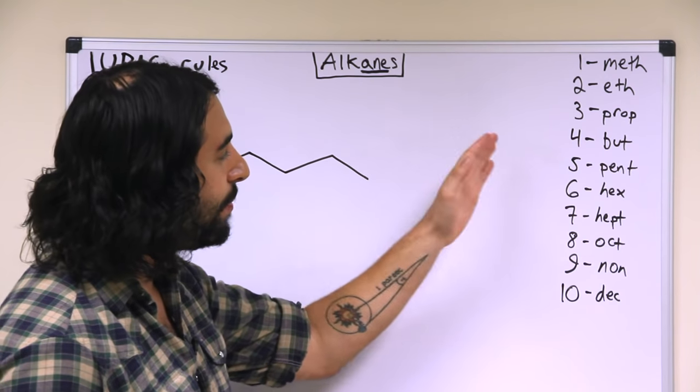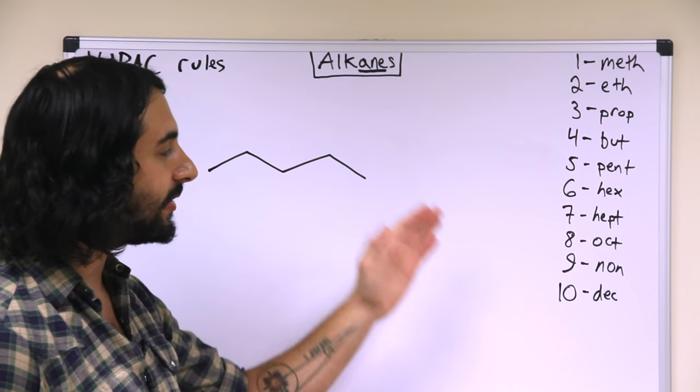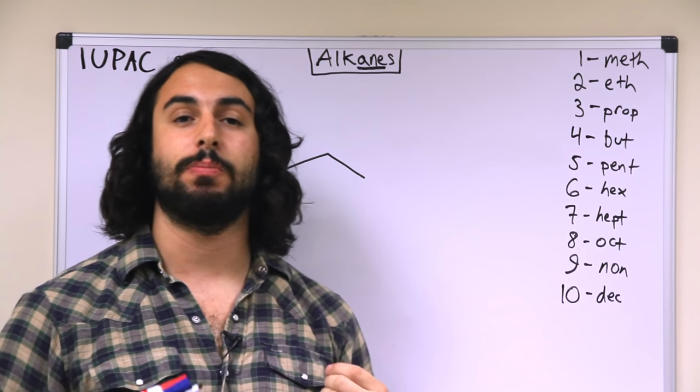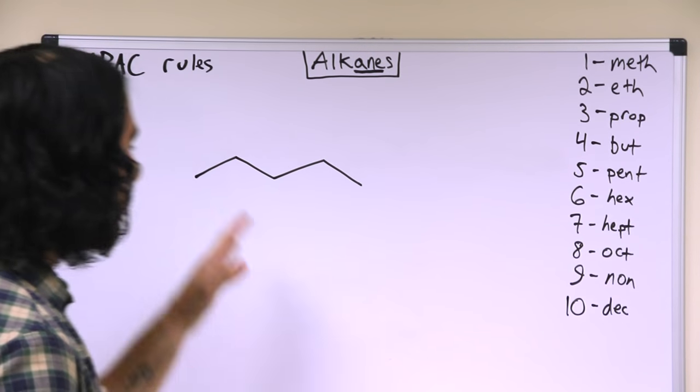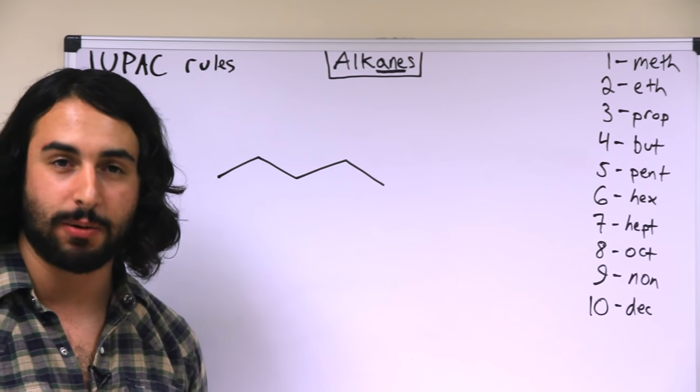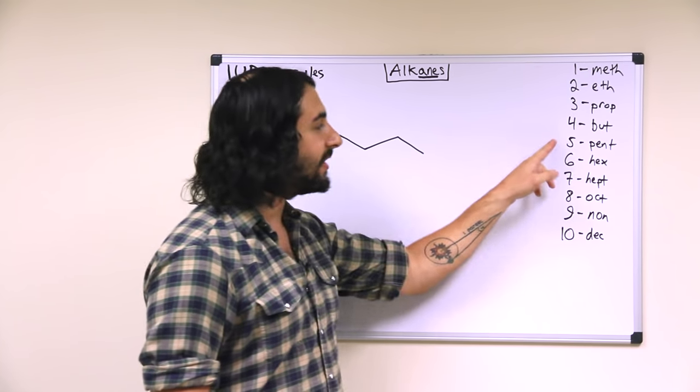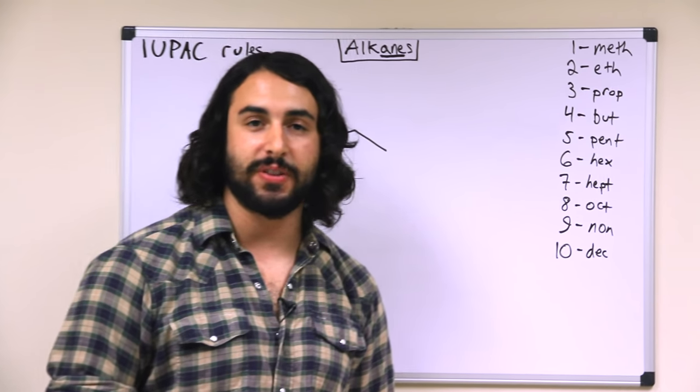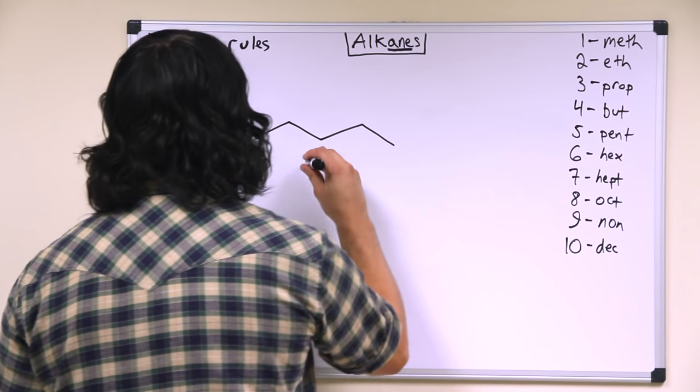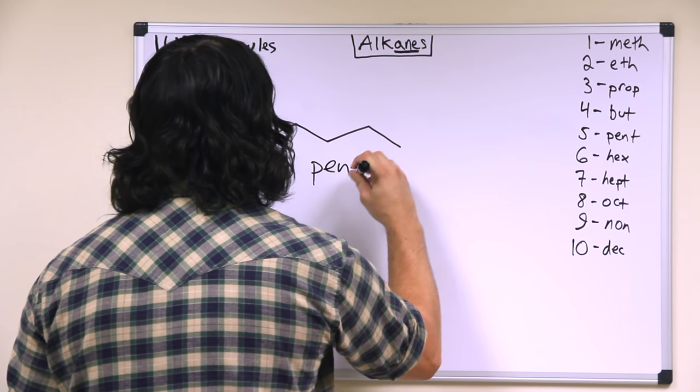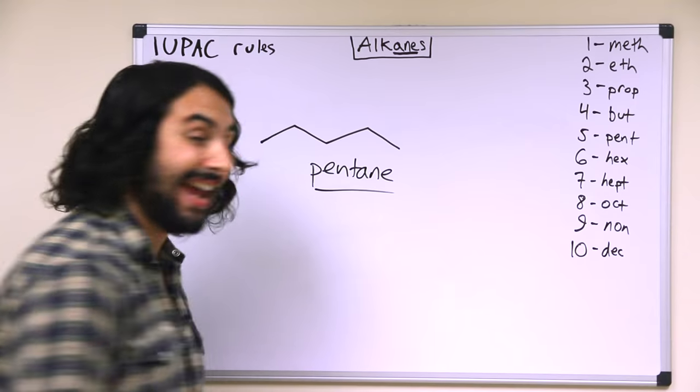So meth, eth, prop, but, pent, hex, hept, oct, non, dec. These would be the prefixes of a given molecule. So let's take our 5-carbon alkane that we were looking at before, one, two, three, four, five. That is going to be pent for the prefix, and it is an alkane, so "-ane", that makes this molecule pentane.